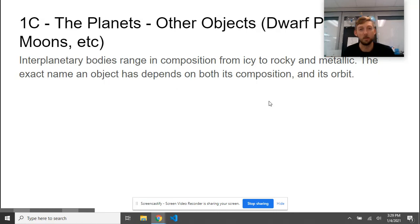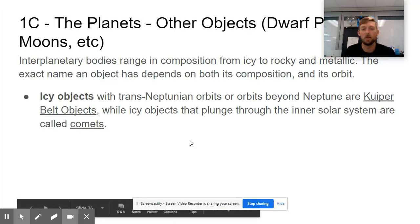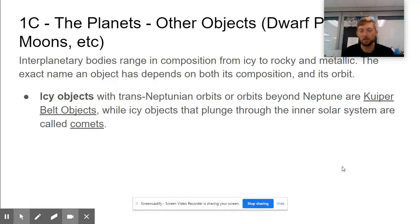Icy objects with trans-Neptunian orbits—that is, orbits beyond Neptune—are Kuiper Belt objects, while icy objects that plunge through the inner solar system are called comets.